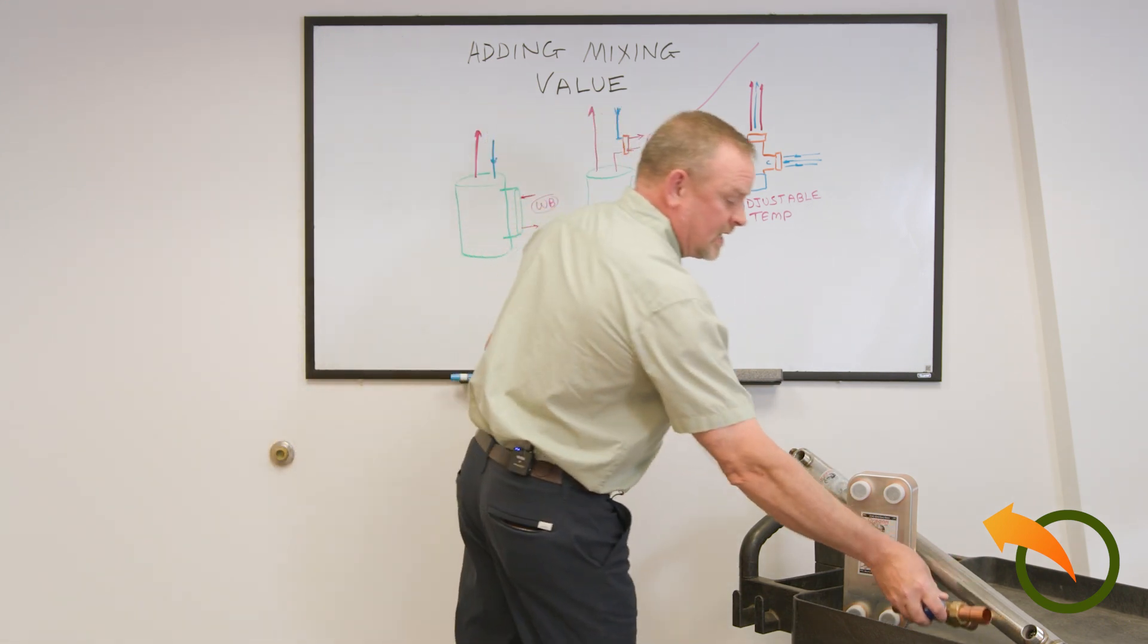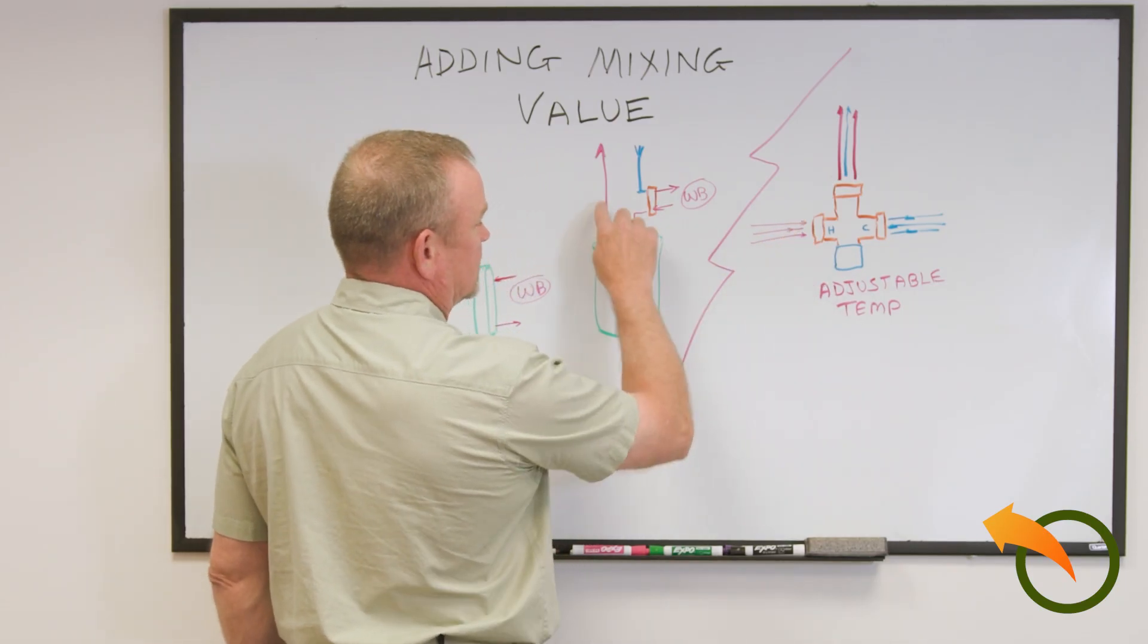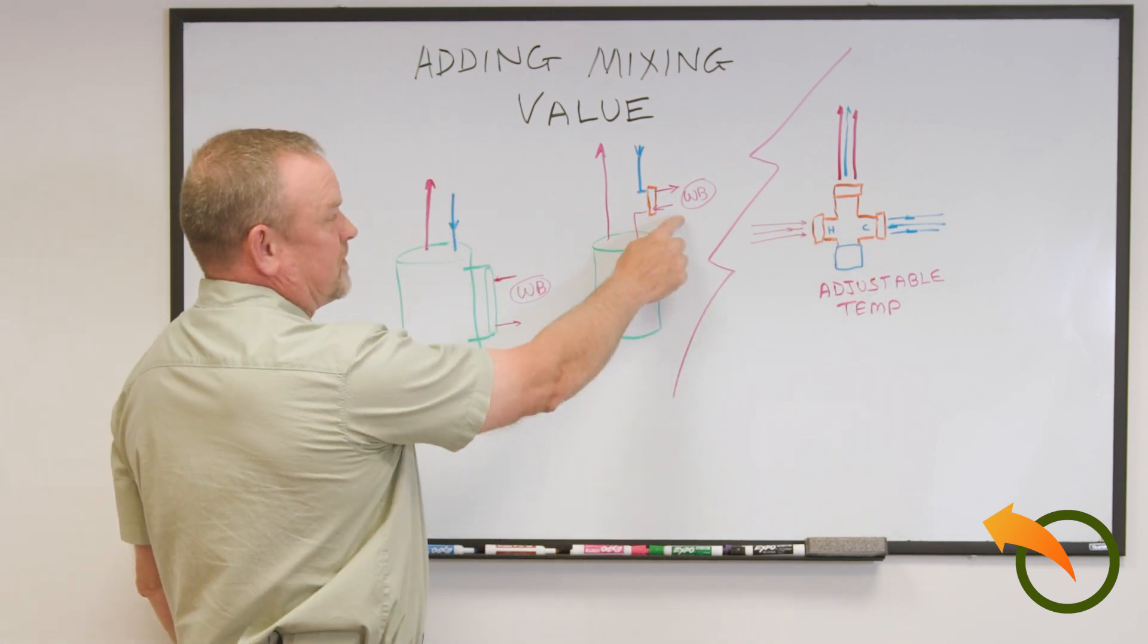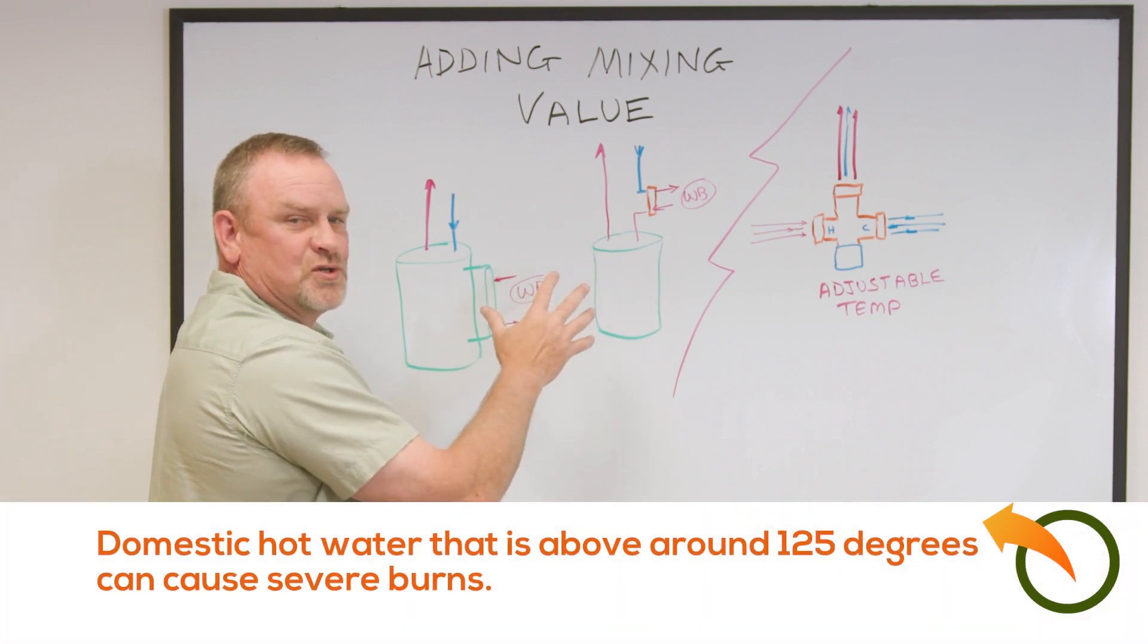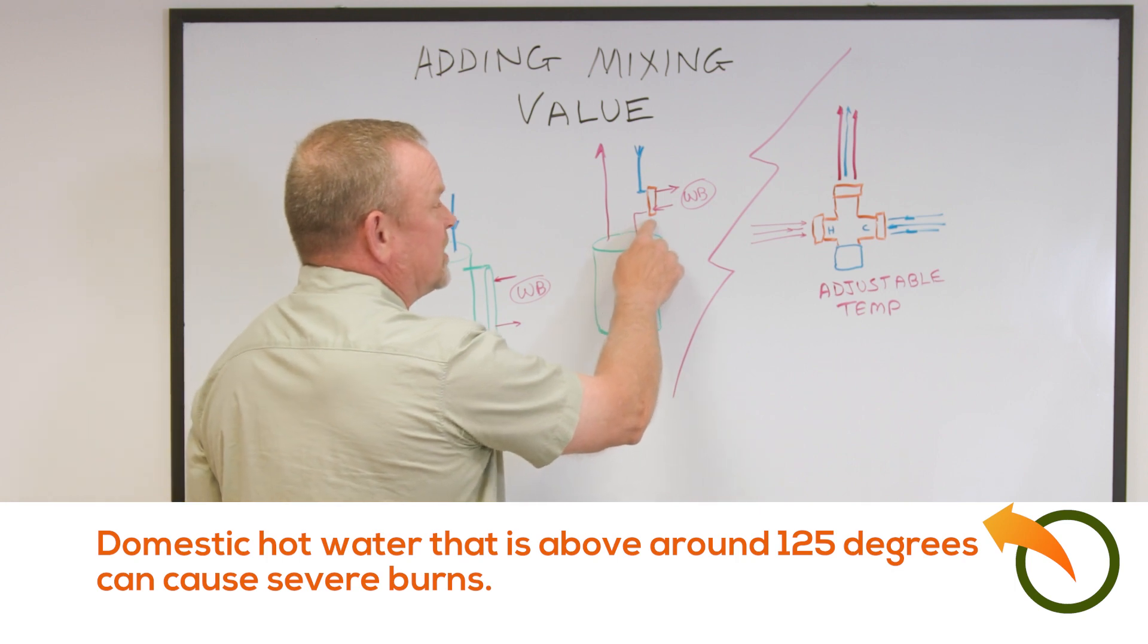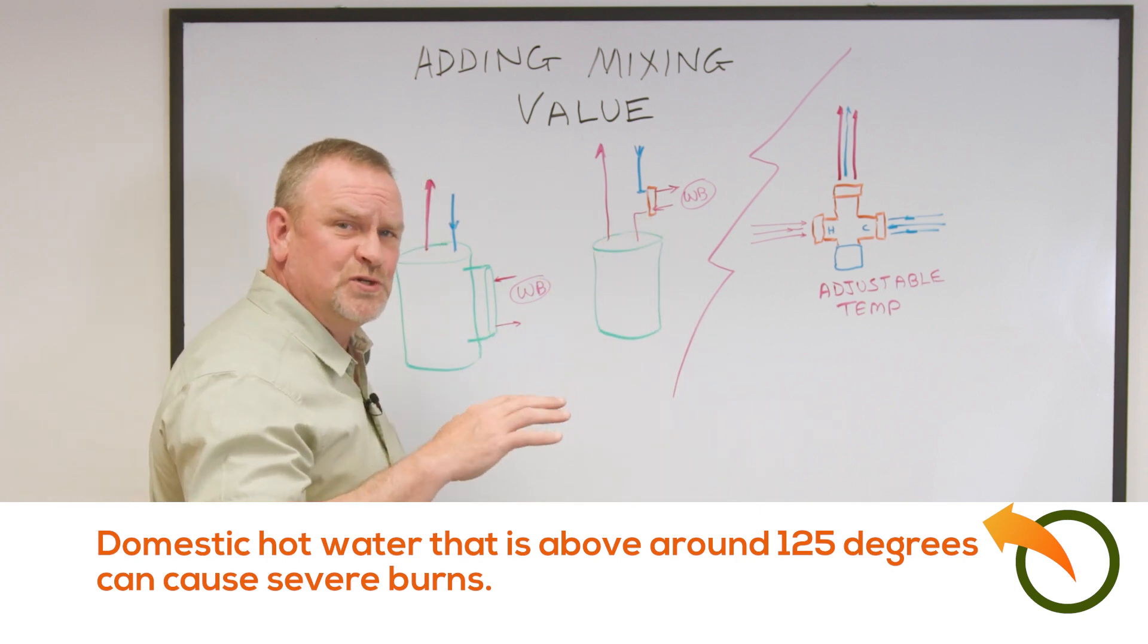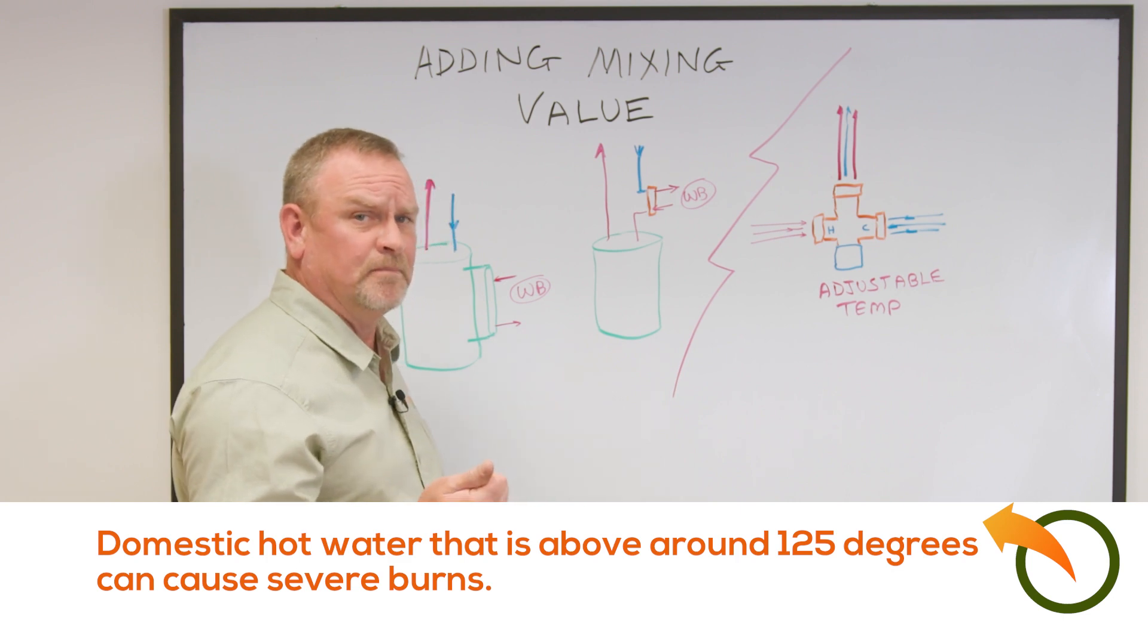So if the hot water comes up and into this valve, if the water is too hot, especially with the plate exchanger, the domestic water is designed to heat up to 125 degrees. With the plate exchanger, I've seen it in excess of 130, 135, not too much more than that. But if you have kids or seniors and they turn on the hot water, it will burn them.